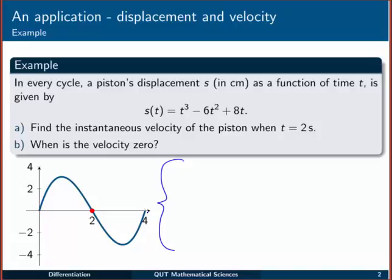Now that's the displacement. So what we're going to do is find the instantaneous velocity of the piston when t = 2 seconds. To do that we'll find the velocity for any time, and we're going to do that by actually finding the derivative of s(t), the instantaneous rate of change of displacement with respect to time. That is the velocity of the piston.